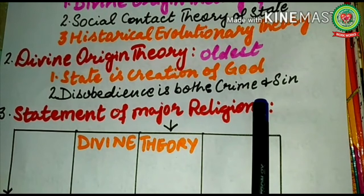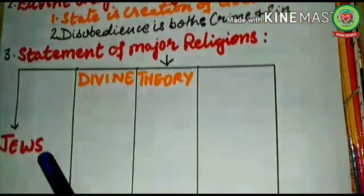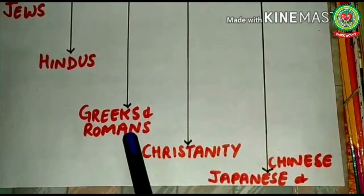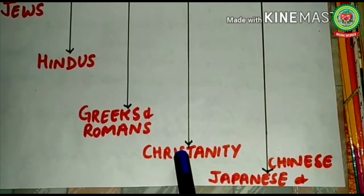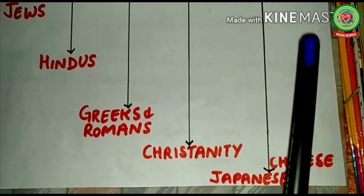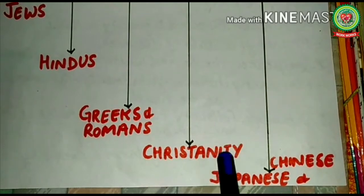Almost all the religions of the world accept the divine theory of the state. Religions such as Judaism, Hinduism, Greek religion, Roman religion, Christianity, Japanese, and Chinese beliefs all accept this divine theory. I will now discuss each of these stepwise.